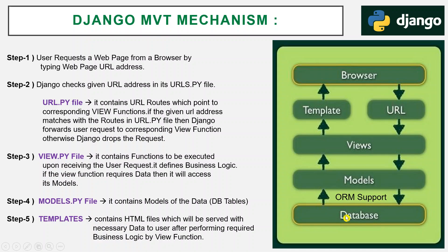In models, we use Python code to create database tables. The model will contact the database regardless of what database it is — the same model works for PostgreSQL, MySQL, Oracle, or anything else. That is the advantage of the model with ORM support, so we don't need to change the code.